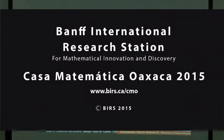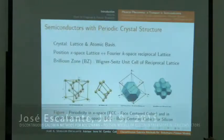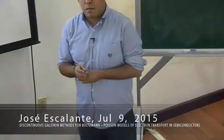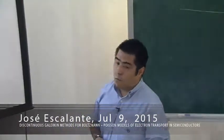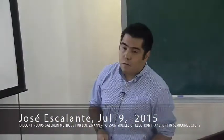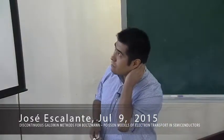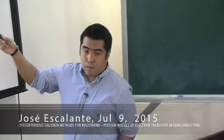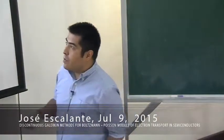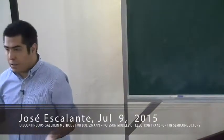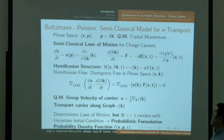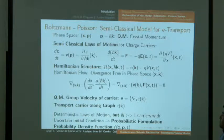In phase space, there's a certain periodicity. For silicon semiconductors, you have a face-centered cubic structure in position space and body-centered cubic in momentum space. The momentum variable works as the velocity variable in Boltzmann problems. We work with the Boltzmann-Poisson system, a classical model for electron transport, operating in the phase space of position and momentum. The momentum is related to the crystal momentum h-bar k.